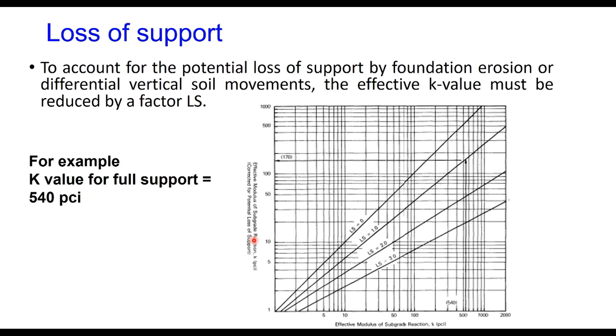We again take an example. K value for full support is 540 pci. If you assume that there is some loss of support, if you enter from this axis corresponding to 540 pci and let us say loss of support is 1, then you get a value of 170 pci. That is the final value of k, this is called effective k value.